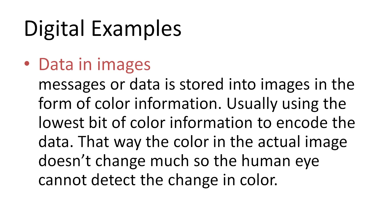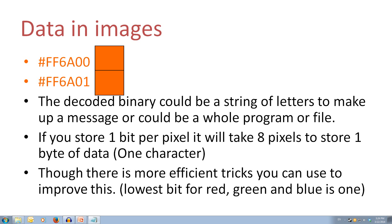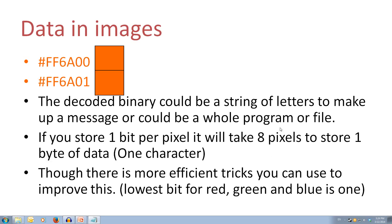A digital example of steganography that is commonly used is hiding messages or data in images. Data is usually stored in the colour information — most commonly, the lowest bit of the colour information is encoded with data. Though the colour is different, the difference is really hard for the human eye to detect. For example, the colour ff6a00 represents a 0 bit and the colour ff6a01 represents a 1 bit. The binary stored inside could be decoded into a message, another image, or even a whole program. However, if you only store 1 bit per pixel, it would take 8 pixels per byte of data — that's one character in ASCII. There are tricks to improve this, such as storing info in all three colour channels.